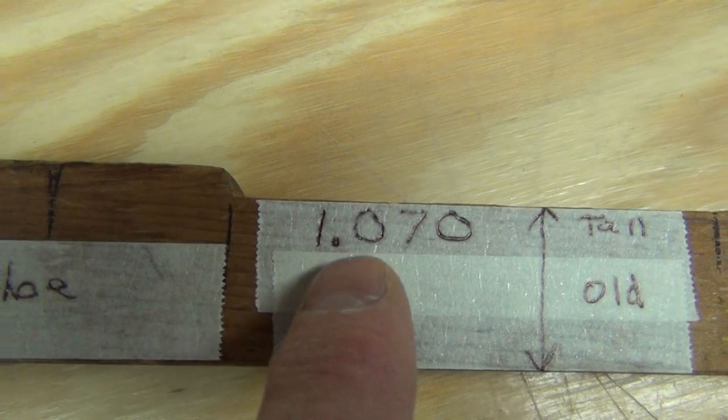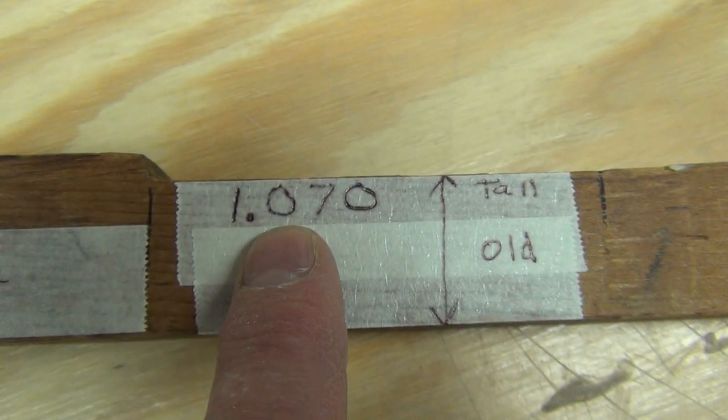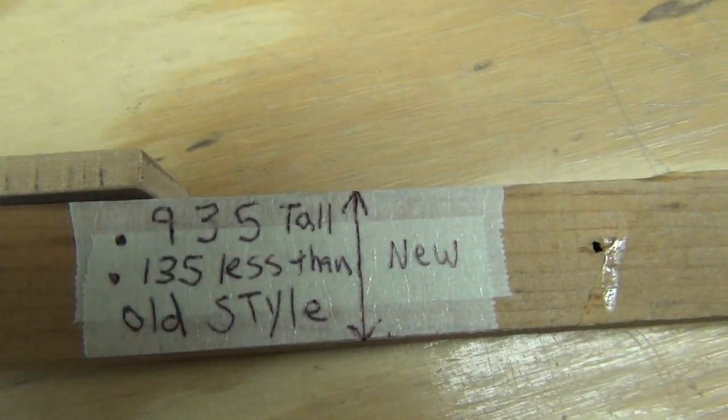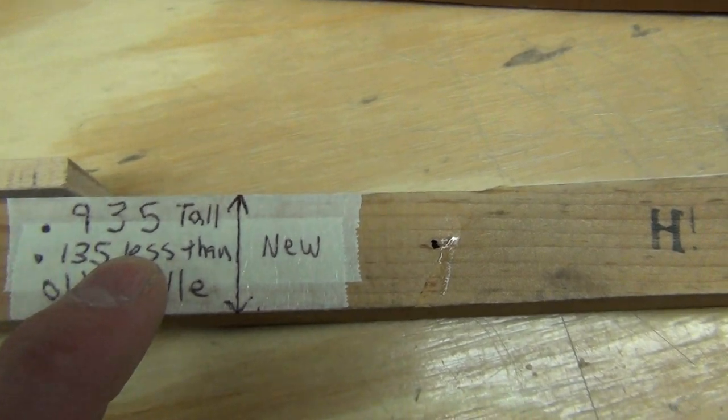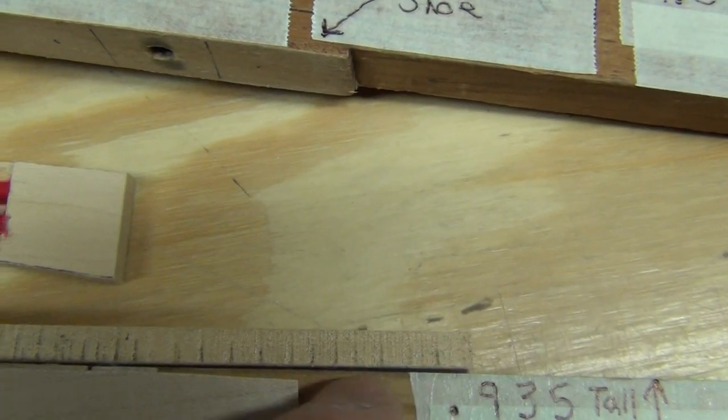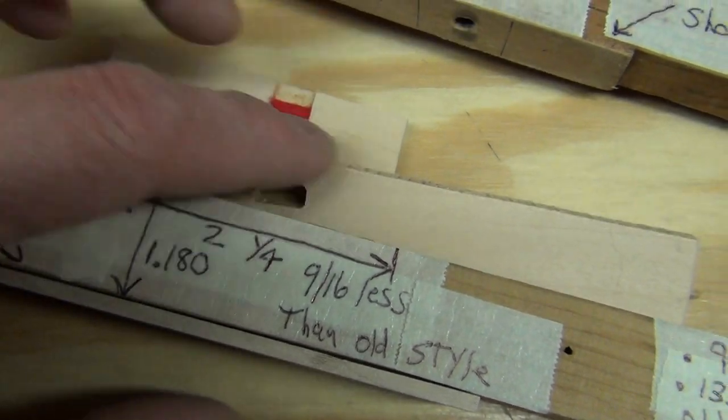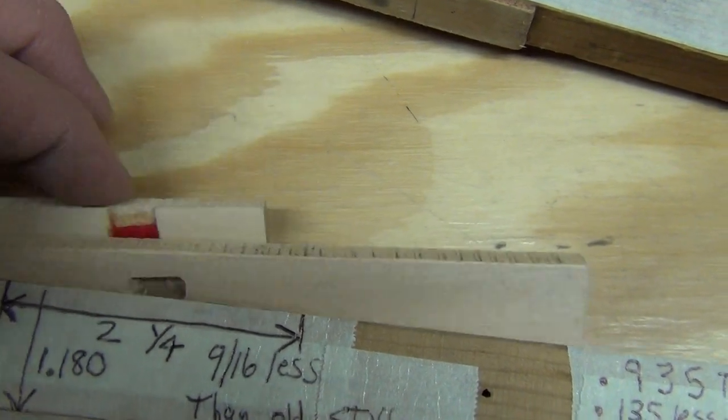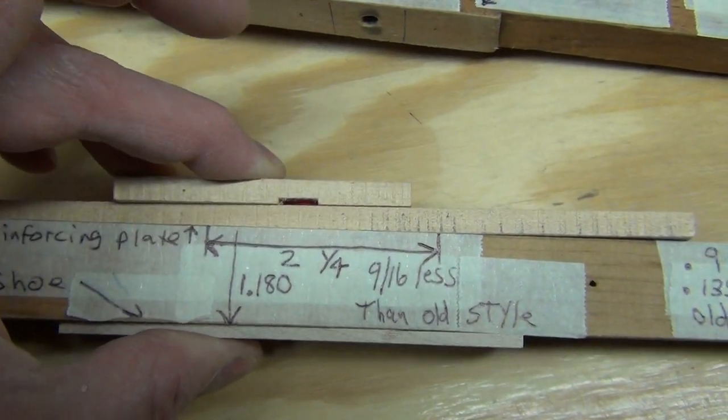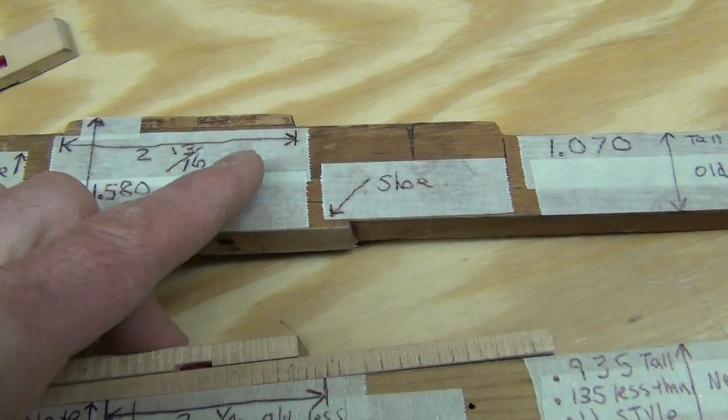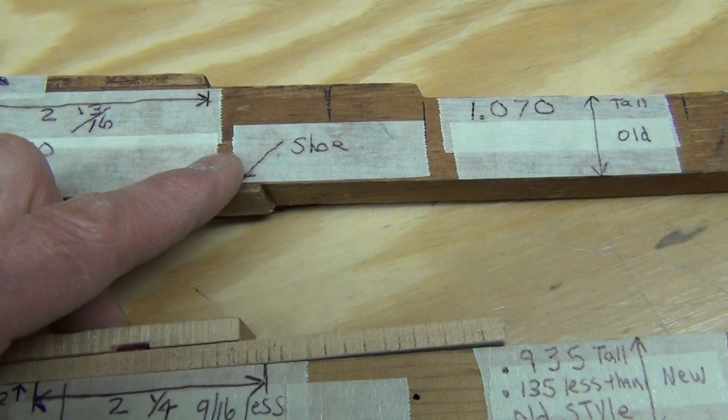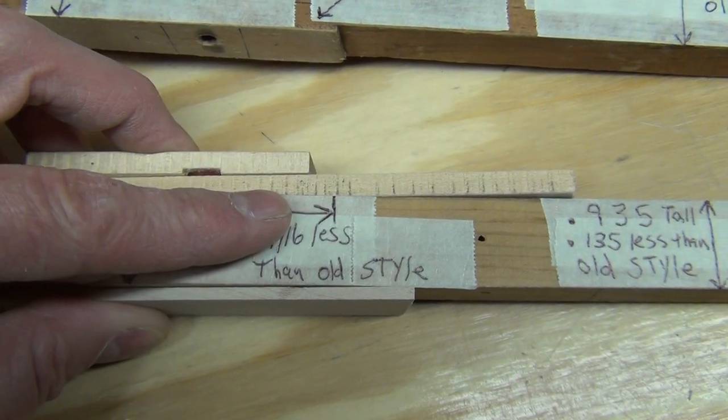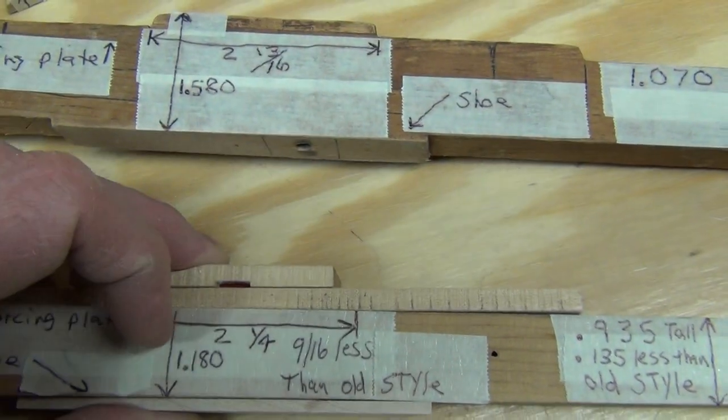The only thing we can't fix is the original height of this key is 1 inch and 70 thousandths. This is .935, so it's an eighth of an inch, essentially less in height. But by putting the new shoe on, the reinforcing plate, and the new button, it's going to make these keys feel just as good as them. Because these keys are really overbuilt. So we'll get this keyboard right back to where the keys don't flex and you have very good control over the instrument.